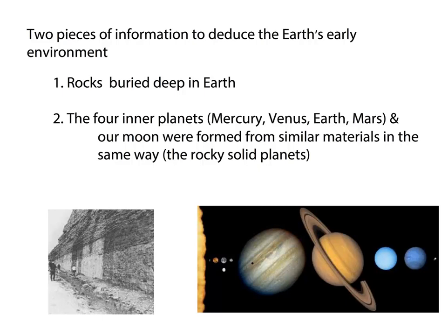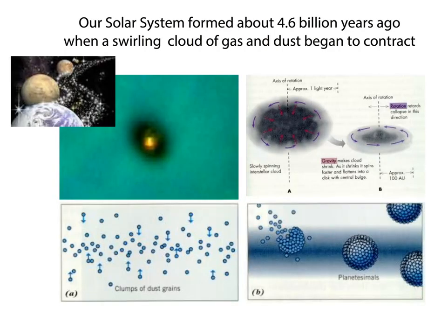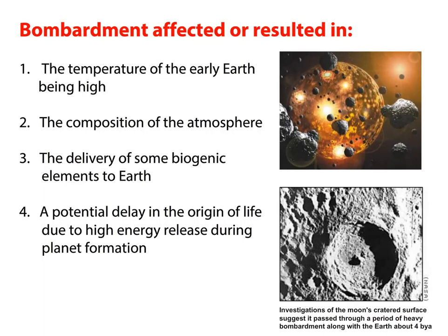The Big Bang happened about 13 billion years ago, and our solar system formed about 4.6 billion years ago. A swirling cloud of gases and dust contracted as gravity kicked in, eventually forming an early resemblance of Earth. There was also the bombardment period, during which the temperature of early Earth was really high and the atmosphere's composition was not great. Some biogenic elements were actually delivered to Earth from outer space, and there was a potential delay in the origin of life due to high energy release during planet formation — every time the planet got hammered by a meteor, things got set back.